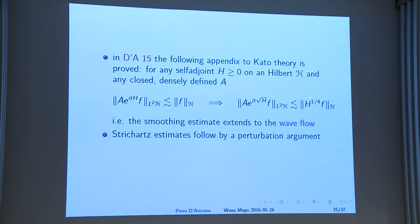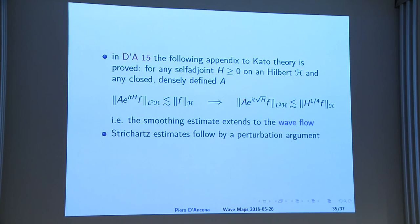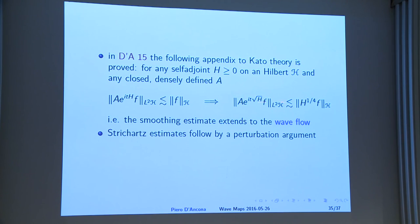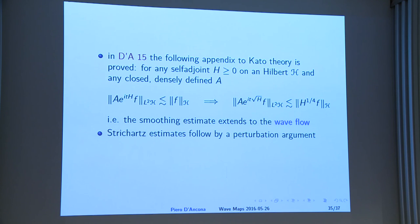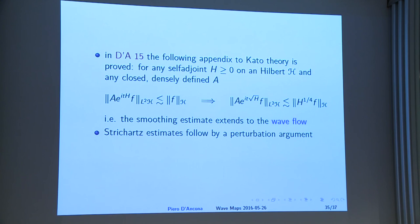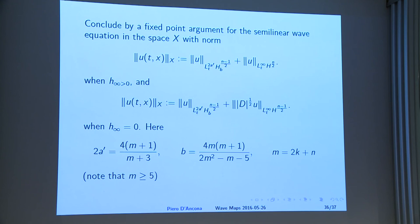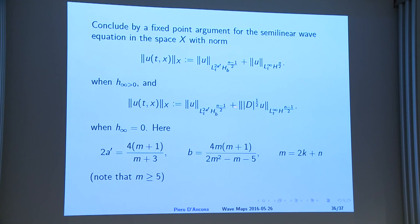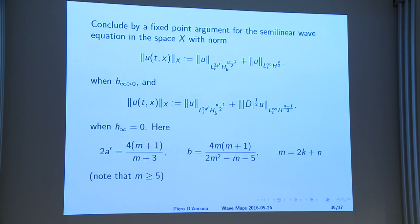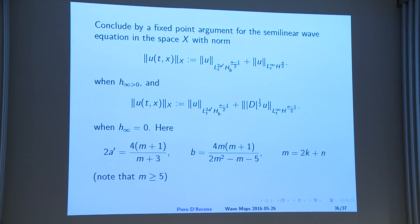The abstract result is: for any self-adjoint non-negative operator A on a Hilbert space H — any closed densely defined A — if you have a smoothing estimate for Schrödinger, you get the corresponding smoothing estimate for the wave equation. For the wave equation, you get estimates that are worse by half a derivative, which is typical. Once you have this smoothing estimate for the wave equation, the potential can be put on the right-hand side as a perturbation. You have to work a little because of singular coefficients giving singular weights, but essentially this is straightforward.